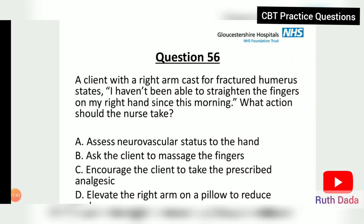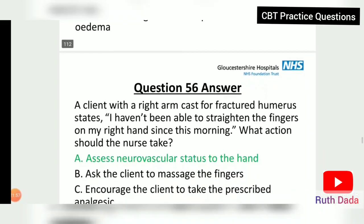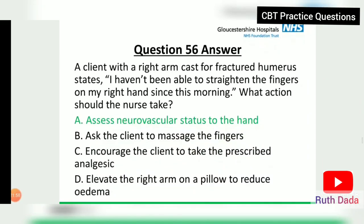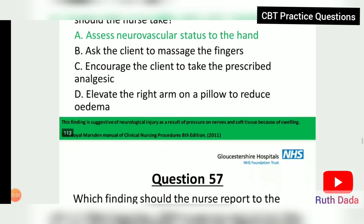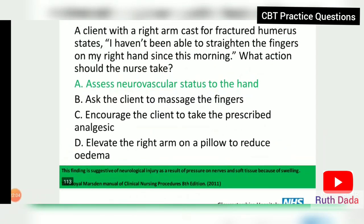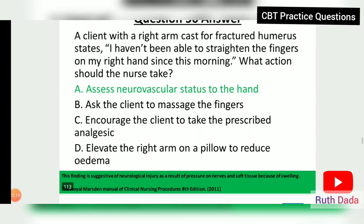Question 56: A client with a right arm cast for a fractured humerus states 'I haven't been able to straighten the fingers on my right hand since this morning.' What action should the nurse take? Assess for neurovascular status. This finding is suggestive of neurological injury as a result of pressure on nerves and soft tissue due to swelling.